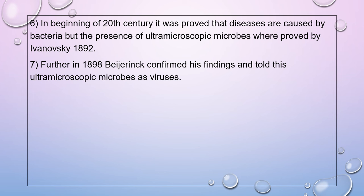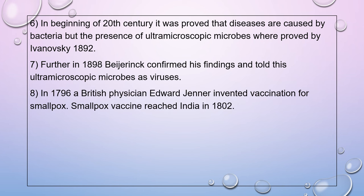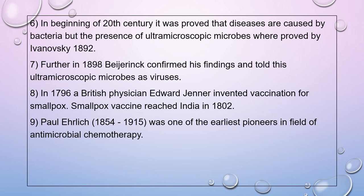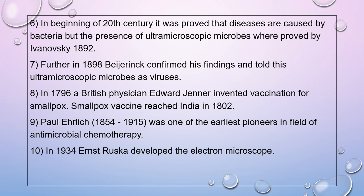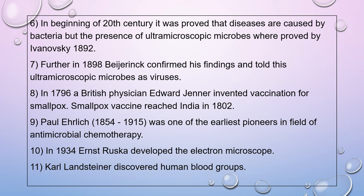In 1898, Beijerinck confirmed these findings and called these ultramicroscopic microbes viruses. In 1796, British physician Edward Jenner invented the vaccine for smallpox, and the smallpox vaccine reached India in 1802. Paul Ehrlich (1854–1915) was one of the earliest pioneers in antimicrobial chemotherapy. In 1934, Ernst Ruska developed the electron microscope. Karl Landsteiner discovered human blood groups.